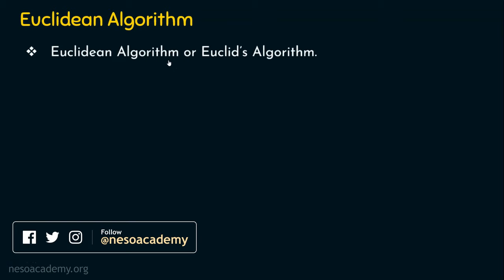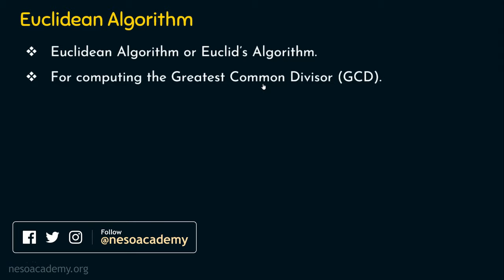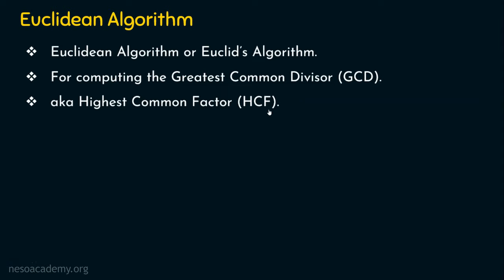This algorithm is for computing the greatest common divisor, simply GCD. This greatest common divisor is also known as the highest common factor, HCF. The concept is the same — whether you refer to it as GCD or HCF, we are going to find the biggest common divisor. If things are not clear, no worries. Let's understand the operation of GCD first.